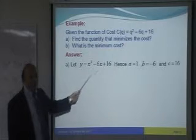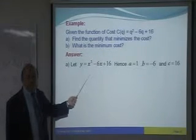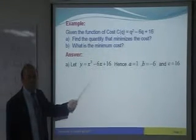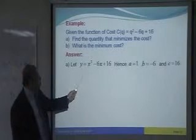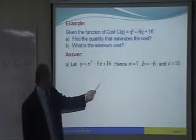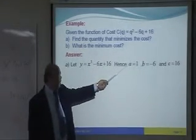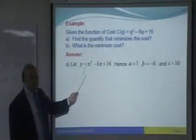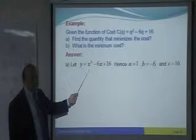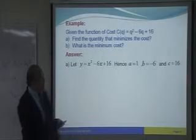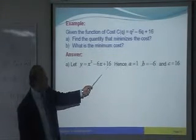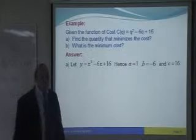Then we compare with what? AX square plus BX plus C. Remember that? So, when you compare with AX square plus BX plus C. Then what is A? A is 1, positive 1. Then B is negative 6. You can see there, negative 6. And C is 16. Understand that?